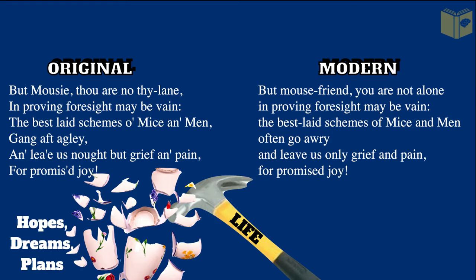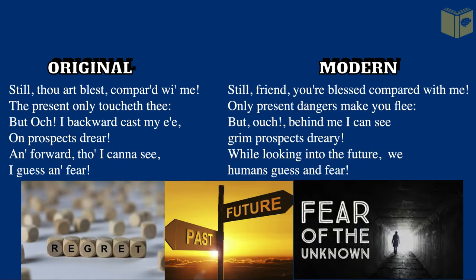But Mousie, thou art no thy lane, in proving foresight may be vain: the best-laid schemes o' mice an' men gang aft agley, an' lea'e us nought but grief an' pain, for promis'd joy! Still thou art blest, compar'd wi' me! The present only toucheth thee: but och! I backward cast my e'e, on prospects drear! an' forward, tho' I canna see, I guess an' fear!